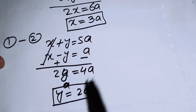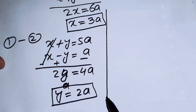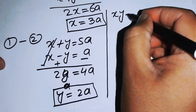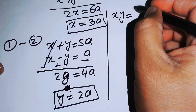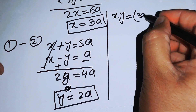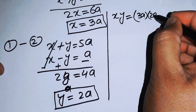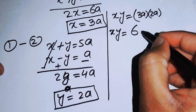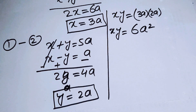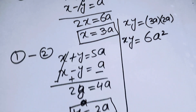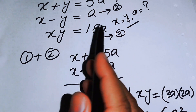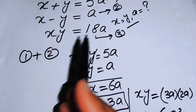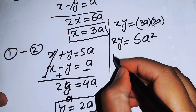Now we have x equals 3a and y equals 2a. We multiply these values together: xy equals 3a times 2a, which gives us xy equals 6a squared. From equation number three, we also have xy equals 18a, so we substitute to get 18a equals 6a squared.